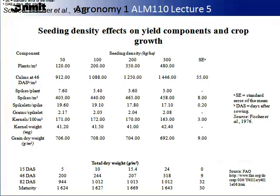Density of seedlings can affect yield components and crop growth. In this diagram, you will see a table showing seed density in kilograms per hectare with factors such as plants per metre squared. You can then see the relationship between certain physiological aspects such as spikes per plant or grains per spikelet — these are all components that make up yield. Please take some time to look at each of these components and how seed density may impact them, and ask yourself: as seed density increases, does the physiological component — such as grains per spikelet — increase or not?